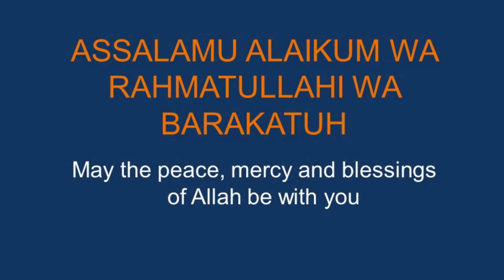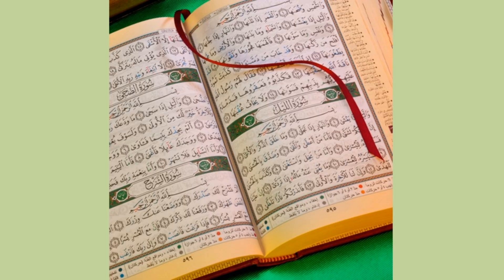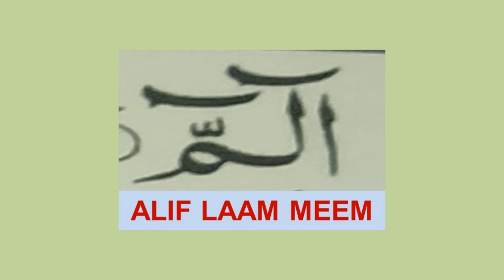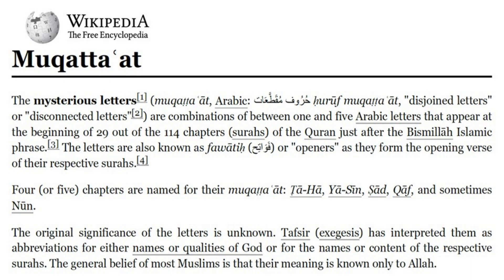Bismillahirrahmanirrahim. Assalamu alaikum wa rahmatullahi wa barakatuhu. To continue with the deciphering of the Quran, today with the knowledge bestowed on me by Allah subhanahu wa ta'ala, let me decode the letters Alif Lam Mim and show you what they actually are. These are considered as mysterious letters, known as Muqatta'at, meaning broken or disjoint letters, mentioned at the beginning of some chapters in the Quran.